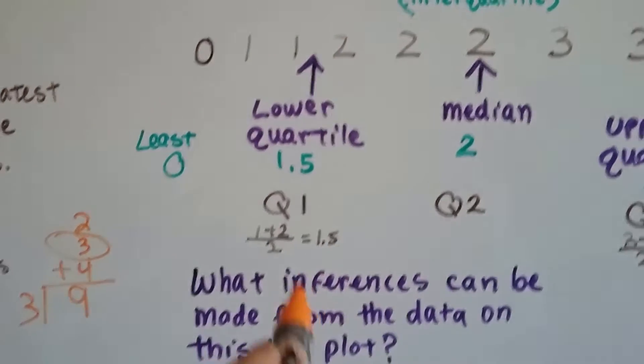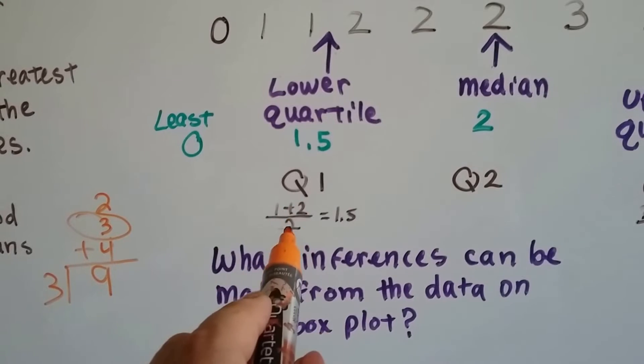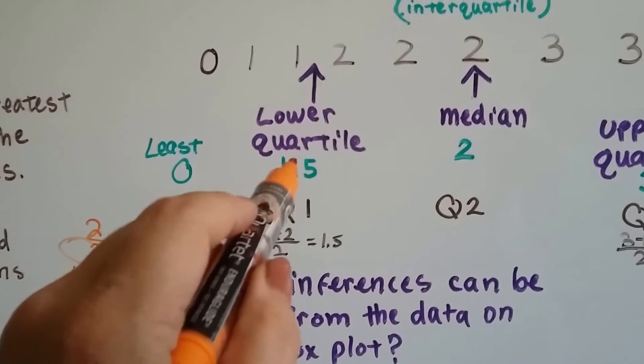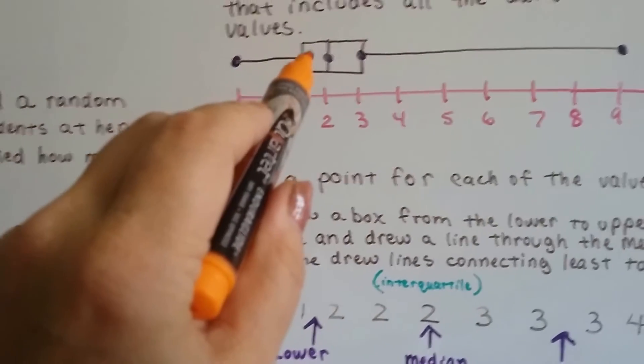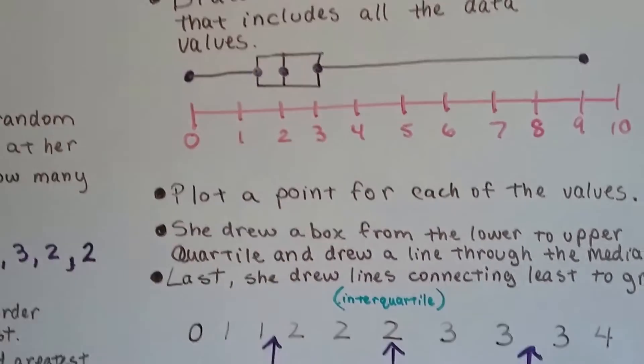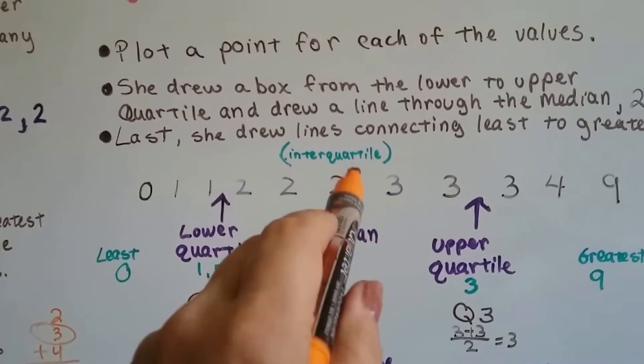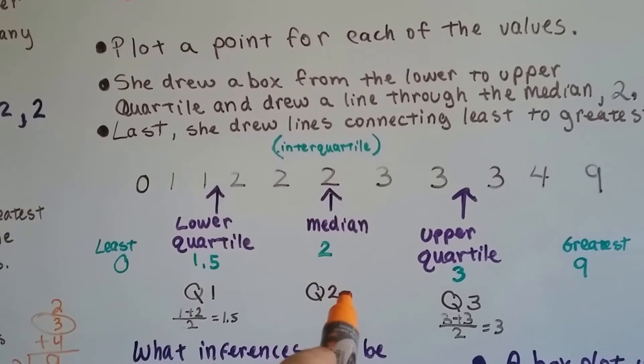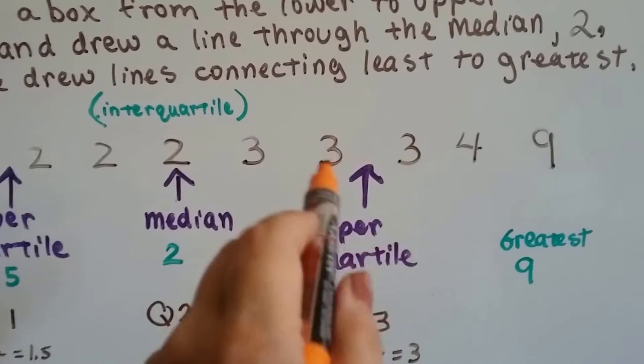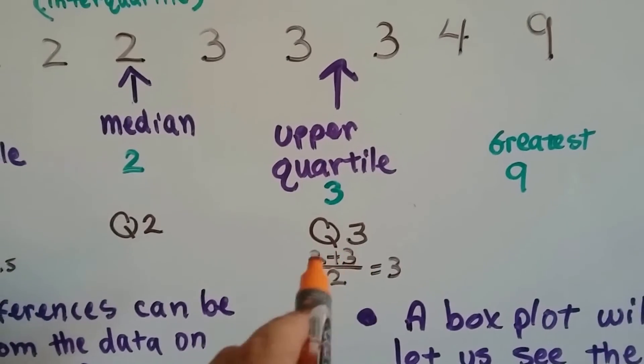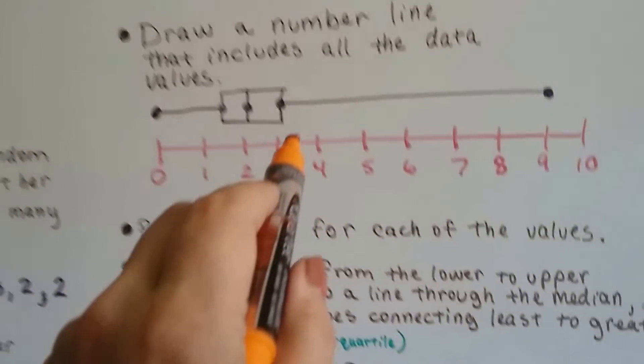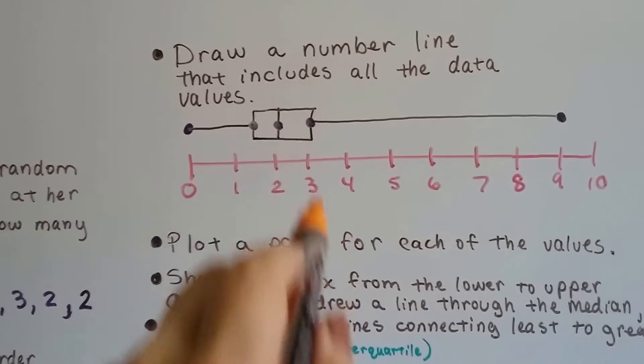So when you have a 1 and a 2, you add the 1 and 2 and get 3, you divide that in half, and you get 1.5. So the lower quartile is 1.5. The median landed on a 2, and then the upper quartile was in between two 3s. I added the two 3s and divided it by 2, which gave me a 3, so the upper quartile is on the 3.